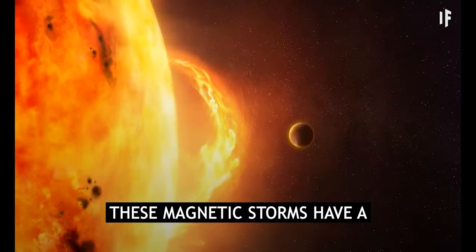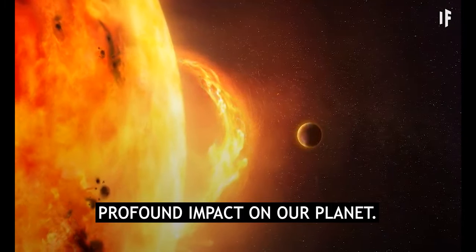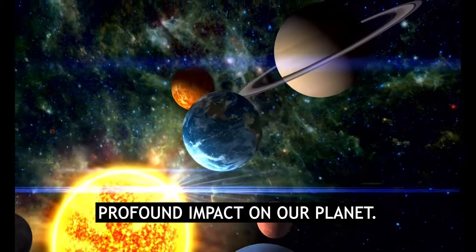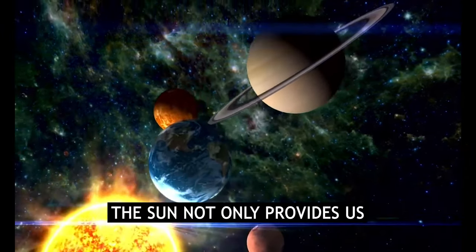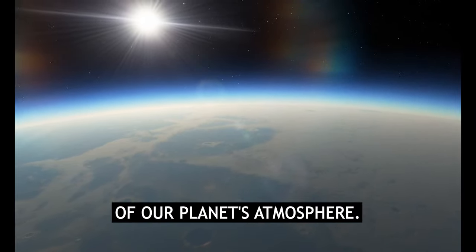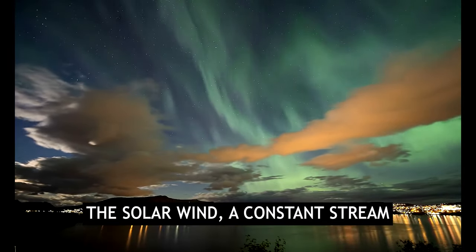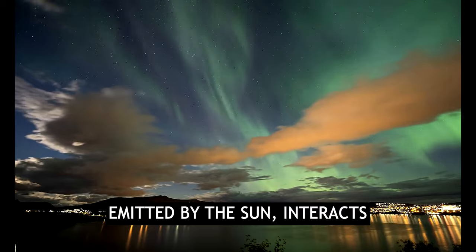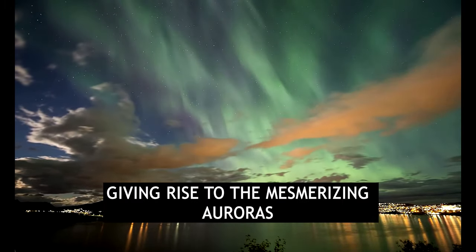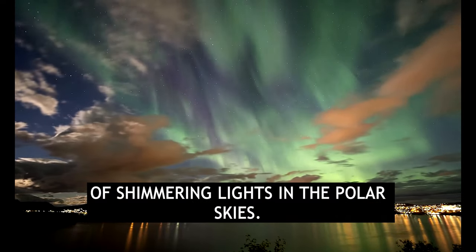These magnetic storms have a profound impact on our planet. The Sun not only provides us with warmth and light but also shapes the very fabric of our planet's atmosphere. The solar wind, a constant stream of charged particles emitted by the Sun, interacts with Earth's magnetic field, giving rise to the mesmerizing auroras, captivating displays of shimmering lights in the polar skies.